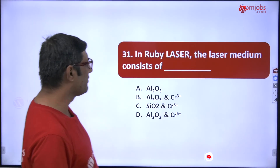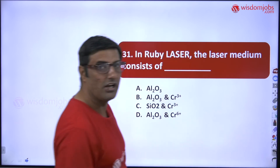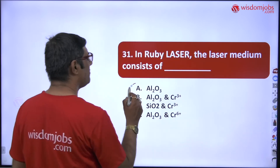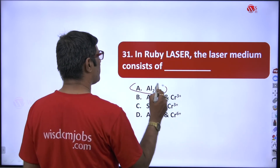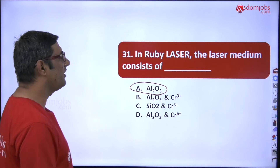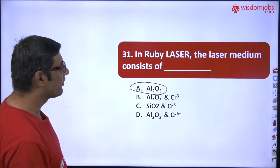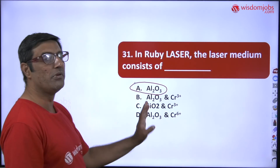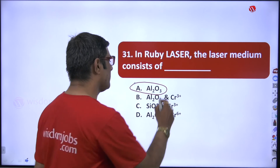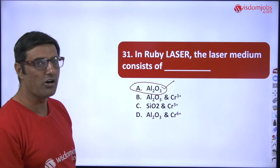Next question: in a ruby laser, the laser medium consists of what? Aluminum oxide is the material used in ruby laser — no chromium material is used. The correct answer is aluminum oxide, or Al₂O₃, option A.